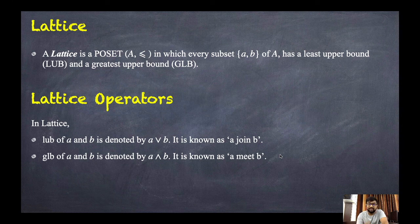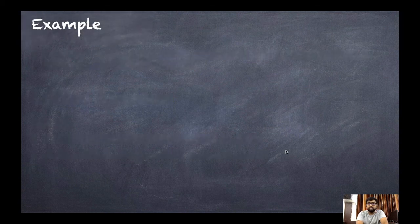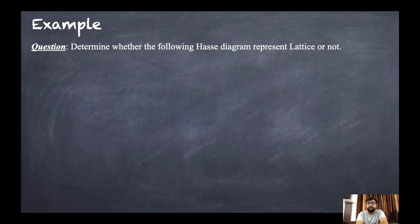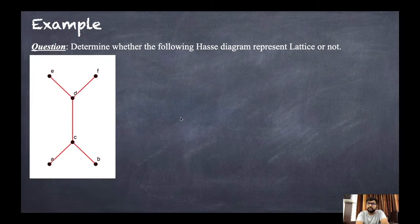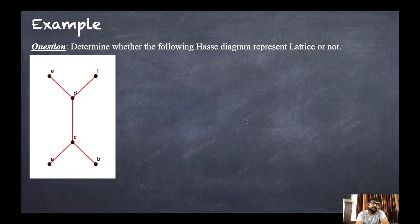This was already discussed in the previous session thoroughly, so if you have any doubt just go through that video. Now the question is: determine whether the following Hasse diagram represents a lattice or not. To check whether it is a lattice or not, all we have to do is construct the GLB table and LUB table, and if we have a GLB and LUB for each and every pair then it is a lattice, otherwise it is not.